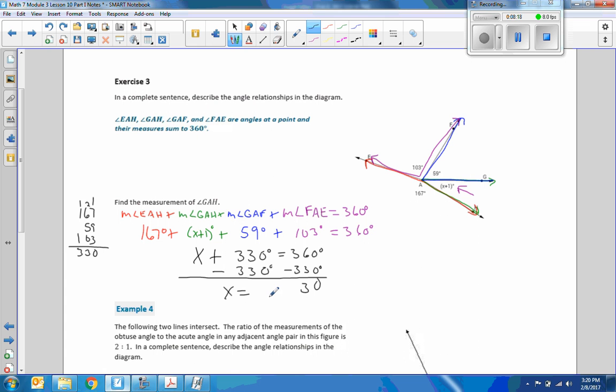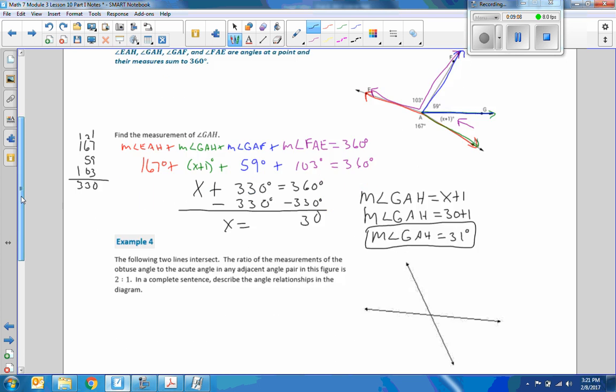So I found X here, but you always need to be careful with these geometry questions. We did not answer the question when solving for X. It did not say find X. It said find the measurement of angle GAH. Now I'm going to answer the question. The measure of angle GAH equals, and I look up here, GAH is right here, X plus 1. So the measure of angle GAH equals my X, which is 30 plus 1, which is 31 degrees. So that is my answer. Do not stop at finding X. Always go back and read the question once you find the missing variable, and then make sure you've answered it.